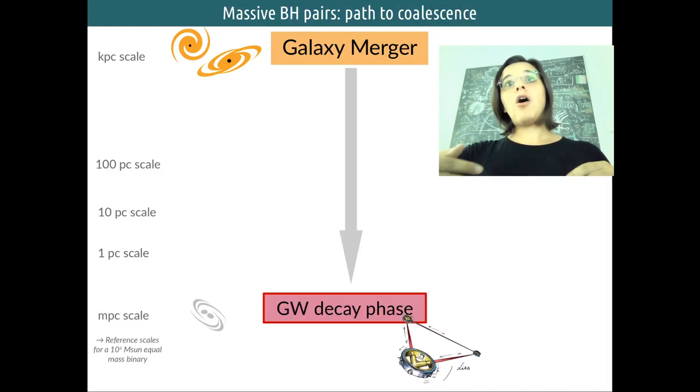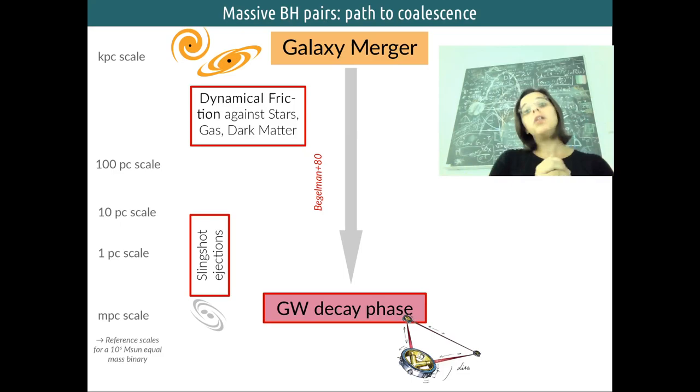Supermassive black hole binaries can form in the aftermath of a galaxy merger, and if they shrink enough, they can enter the gravitational wave emission stage and enter the LISA band. This is why we really care for those.